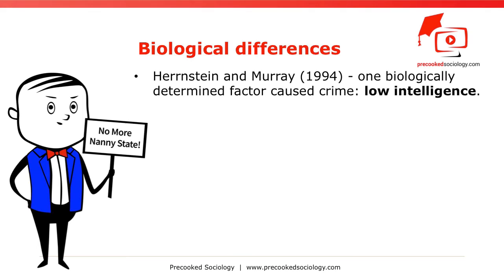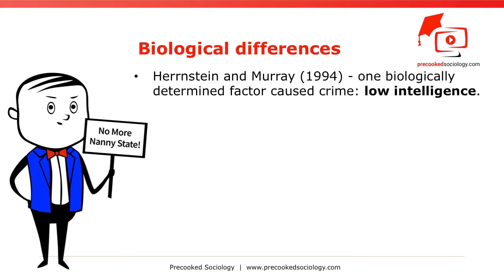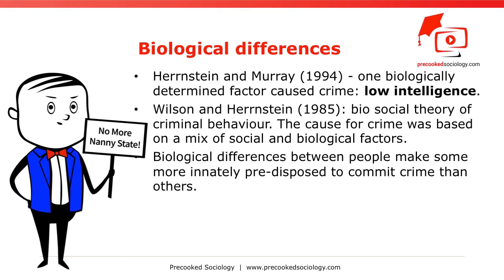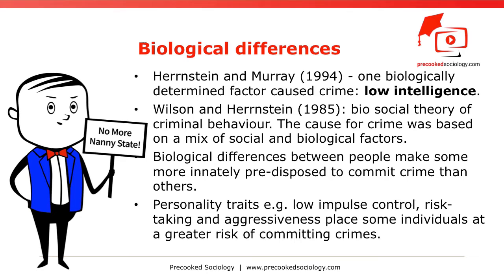Regarding biological differences: Herrnstein and Murray in 1994 stated that one biologically determined factor caused crime, namely low intelligence. Wilson and Herrnstein in 1985 had previously argued for a biosocial theory of criminal behavior. According to this theory, the cause of crime was based on a mix of social and biological factors. Biological differences between people make them more innately predisposed to commit crime than others. Personality traits like low impulse control, risk-taking, and aggressiveness place some individuals at a greater risk of committing crimes.